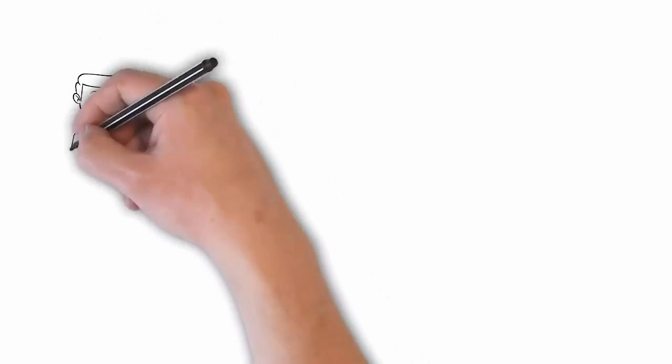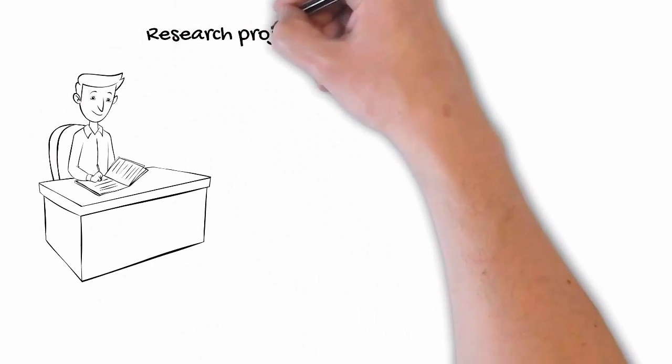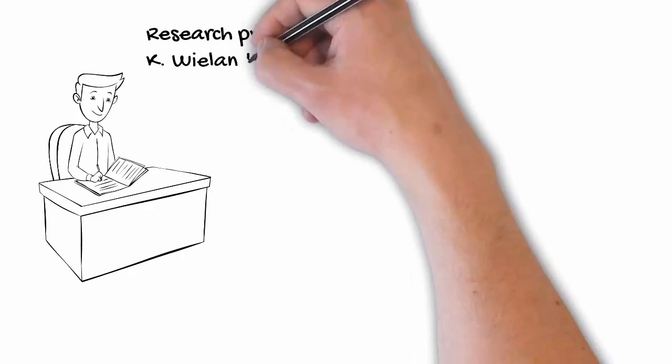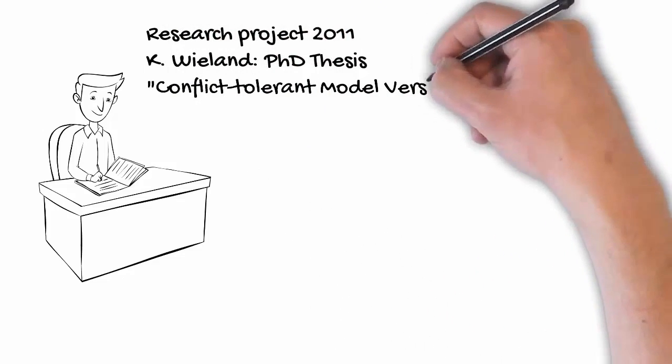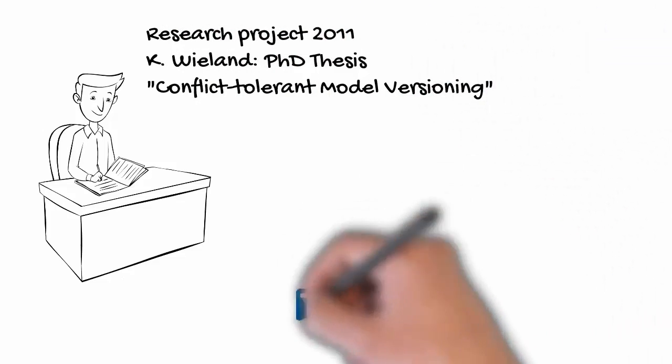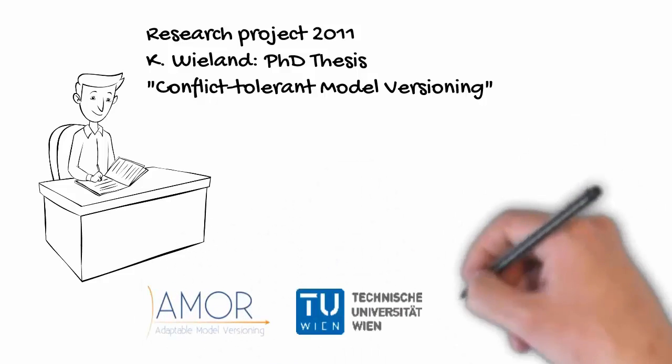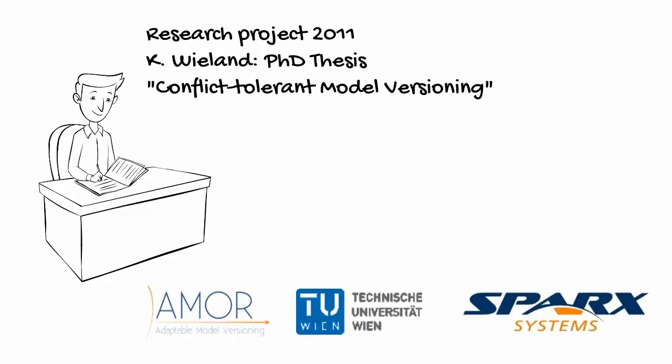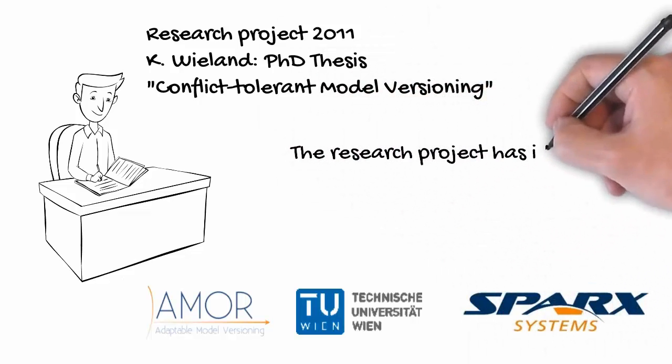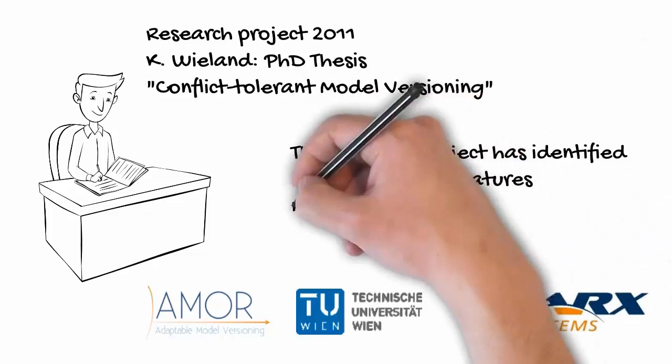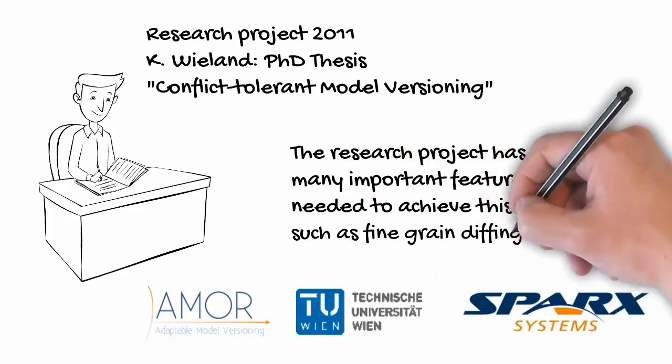It all started in 2011 with a PhD thesis on conflict-tolerant model versioning done at the Vienna University of Technology. The ultimate goal was to come up with a solution allowing you to compare versions, detect and resolve conflicts and merge the results back into the trunk of the tree. Simply put, the conflict-tolerant merge will ensure that the changes of all users are considered when merging. The research project has identified many important features needed to achieve this capability such as fine-grained diffing.